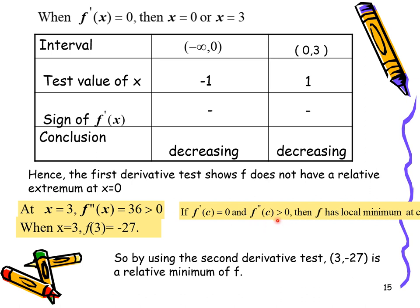Using the second derivative test: substituting X = 6 gives a value greater than 0 (volume minimum), and substituting X = 2 gives a value less than 0 (volume maximum). Therefore, X = 2 is chosen. The area of each square cut from the corners is 2 × 2 = 4 cm². This value of X gives the maximum volume.